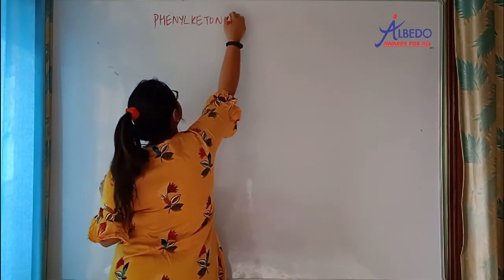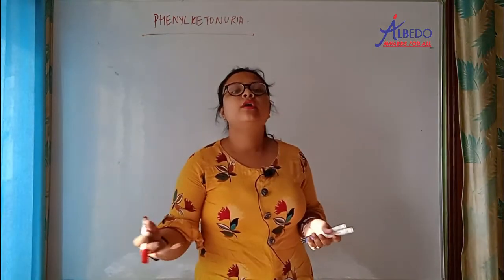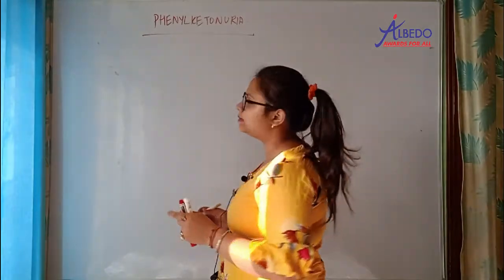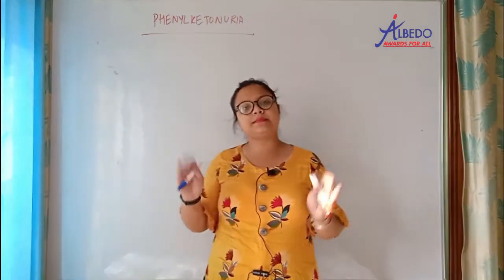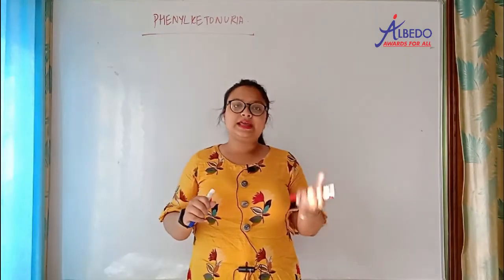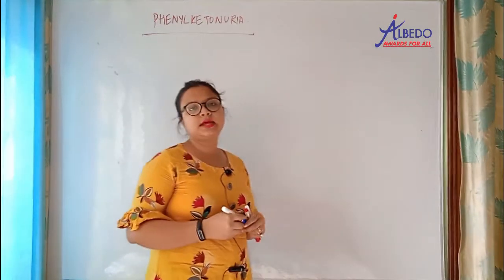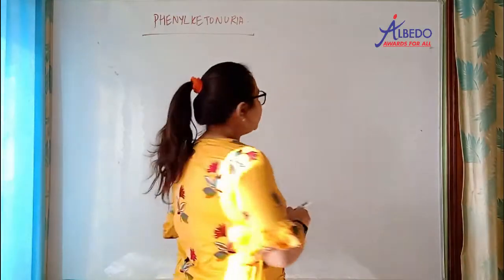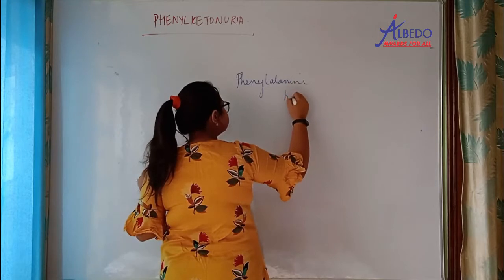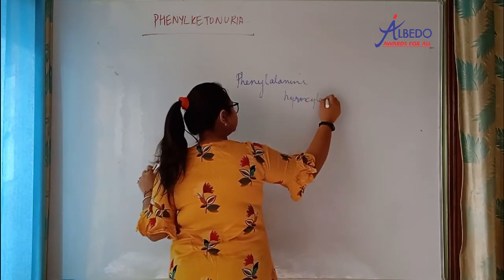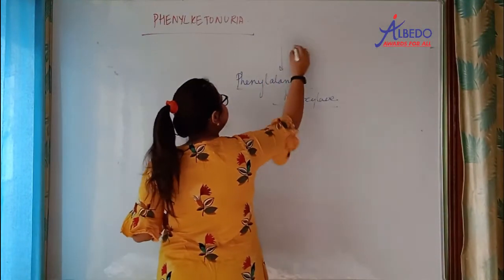Next is phenylketonuria. Phenylketonuria is an inborn error of metabolism. Inborn, that is congenital — meaning since birth. There is an enzyme called phenylalanine hydroxylase, which is encoded by a gene. This enzyme converts the amino acid phenylalanine into tyrosine.